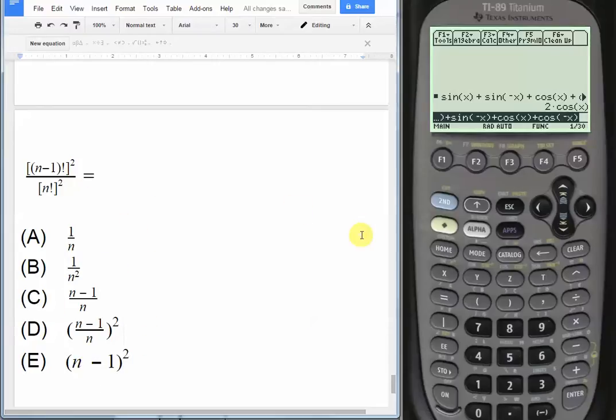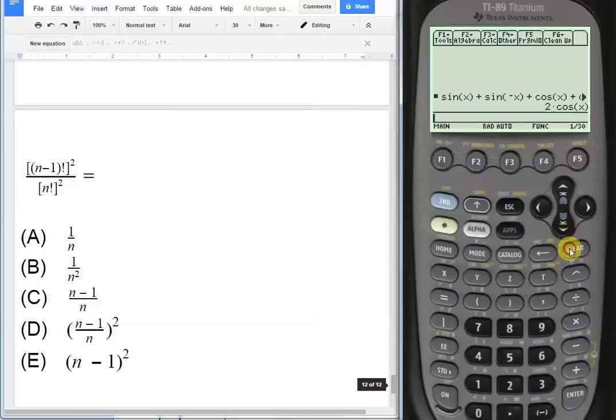We're just going to put in x for simplicity here instead of n. Let me just clear everything. Same exact thing, just be careful when you key it in. Two parentheses to open, x minus 1.